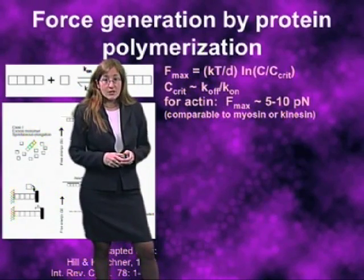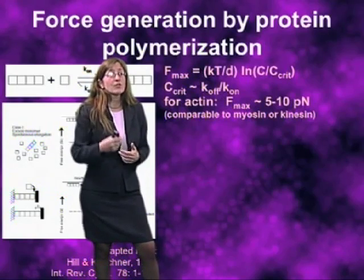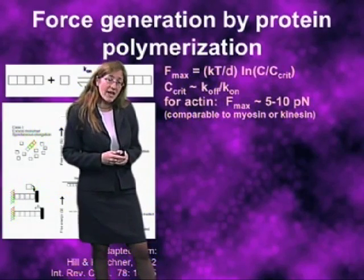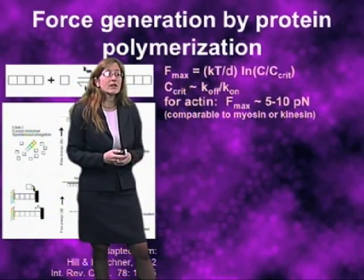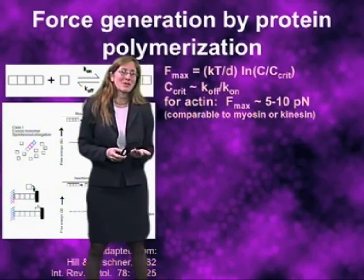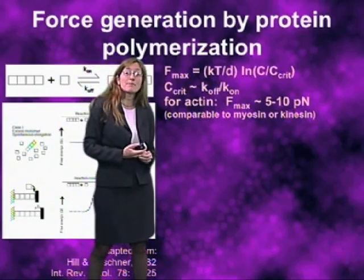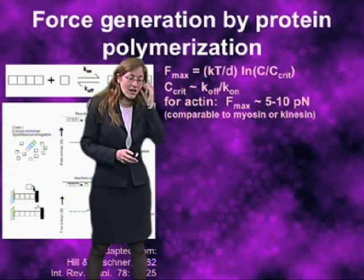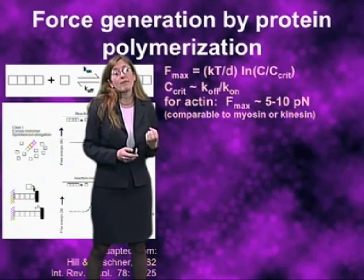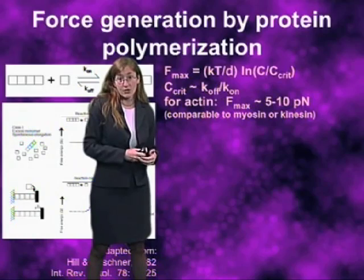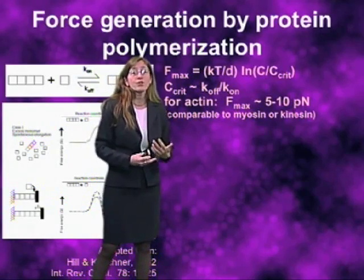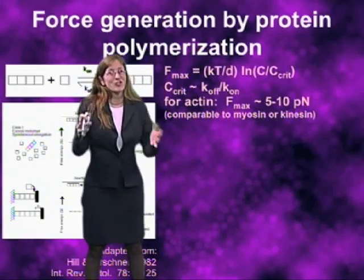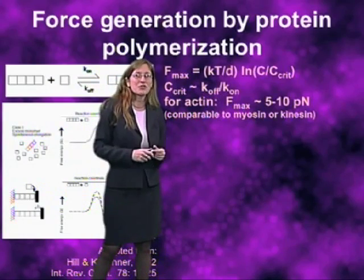C-crit for actin filaments is on the order of about one micromolar. And inside of cells, the concentration of actin is much, much higher than that — there's always excess monomer present. If you take reasonable estimates for the amount of actin present inside of cells and plug it into the equation, the number you come up with for the amount of force that can be generated by this very non-intuitive mechanism is on the order of about five to ten piconewtons. To put that in scale, that's almost exactly the same amount of force that's generated by a single molecule of myosin or a single molecule of kinesin when they cleave ATP in order to walk along a track. So this very non-intuitive form of force generation, driven by protein polymerization, is not just a motor, but in fact it's a very good motor — just as good as any of the more classical molecular motors that have been studied at the level of atomic detail.